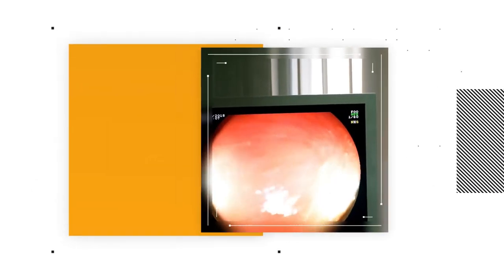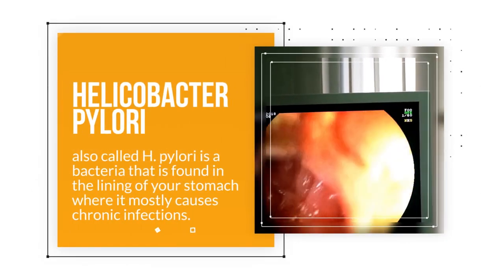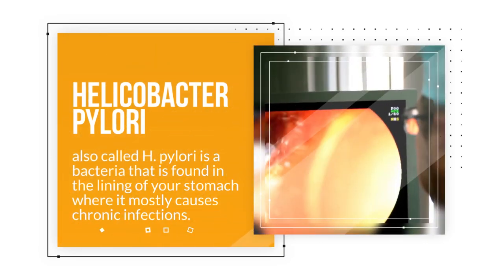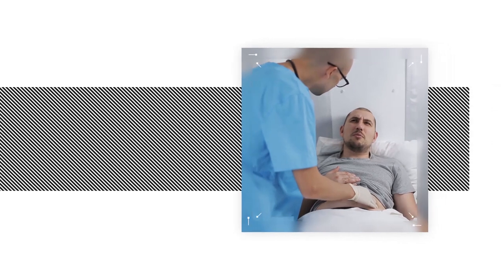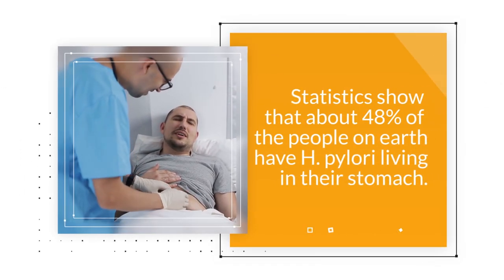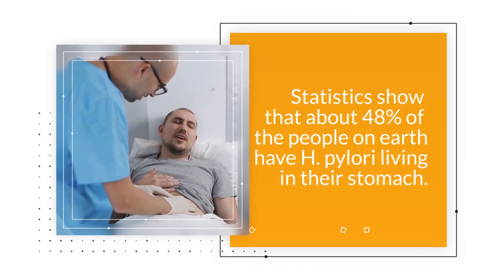Helicobacter pylori, also called H. pylori, is a bacteria that is found in the lining of your stomach where it mostly causes chronic infections. Statistics show that about 48% of the people on Earth have H. pylori living in their stomach.